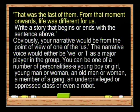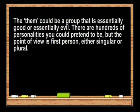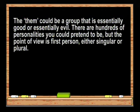You can be one of a number of personalities: a young boy or girl, young man or woman, an old man or woman, a member of a gang, an underprivileged or oppressed class, or even a robot. The 'them' could be a group that is essentially good or essentially evil. There are hundreds of personalities you could pretend to be, but the point of view is first person, either singular or plural.